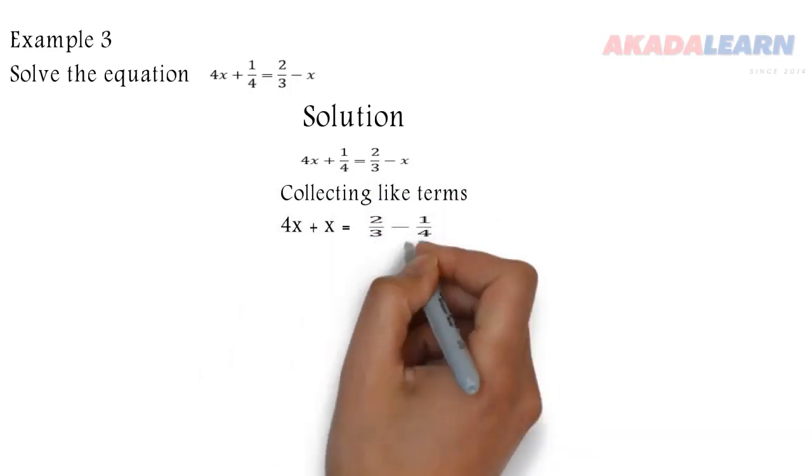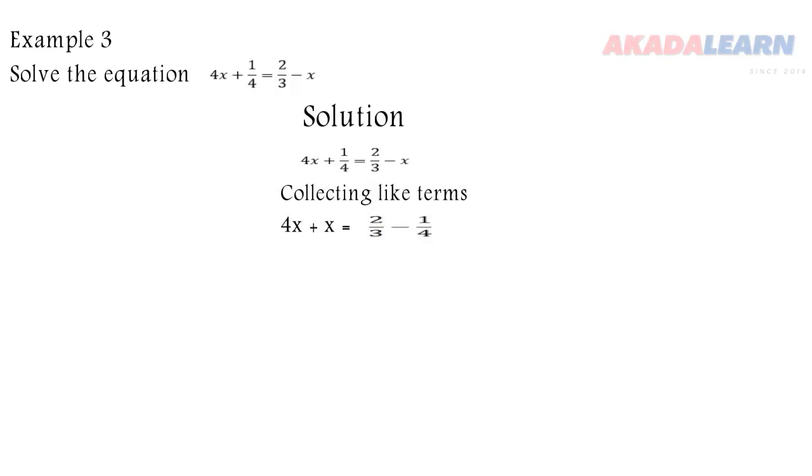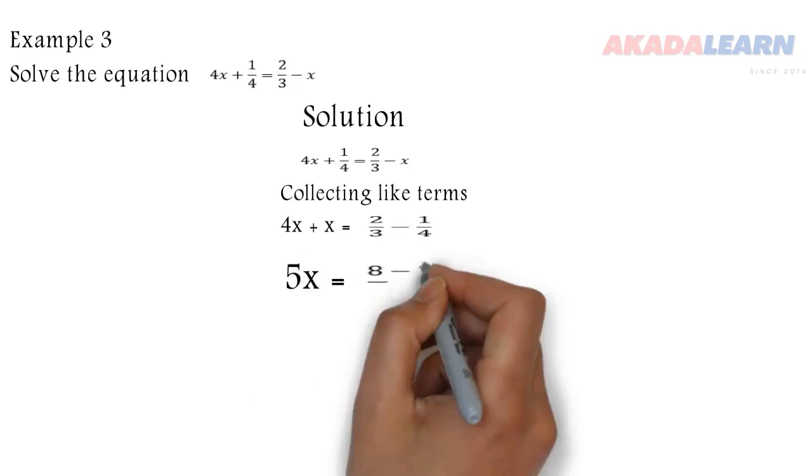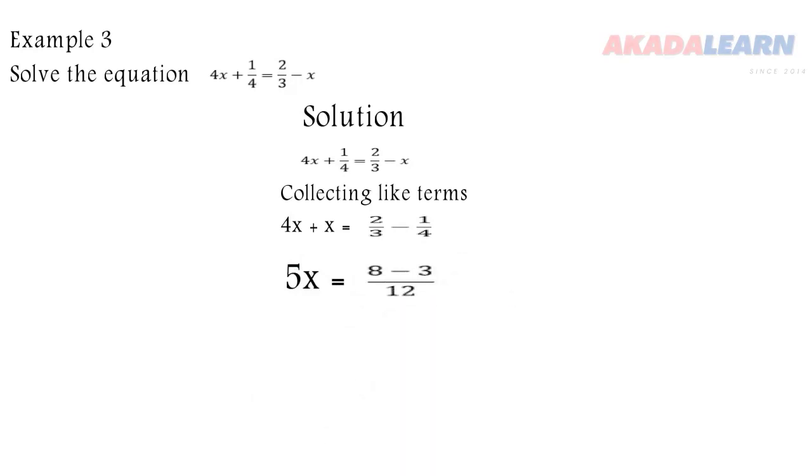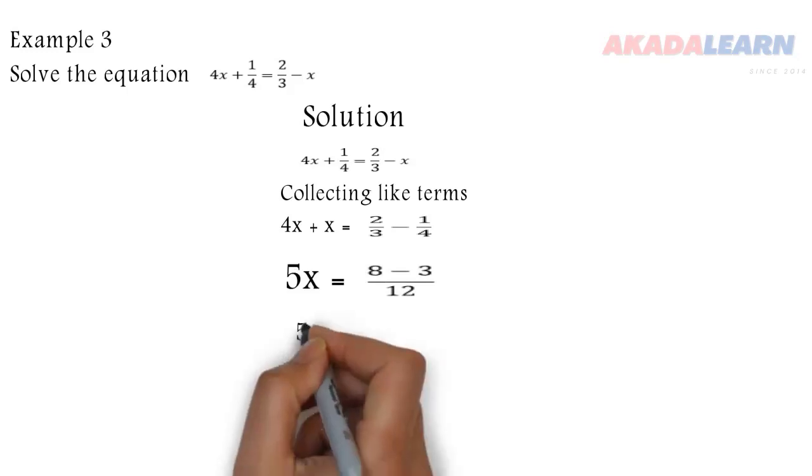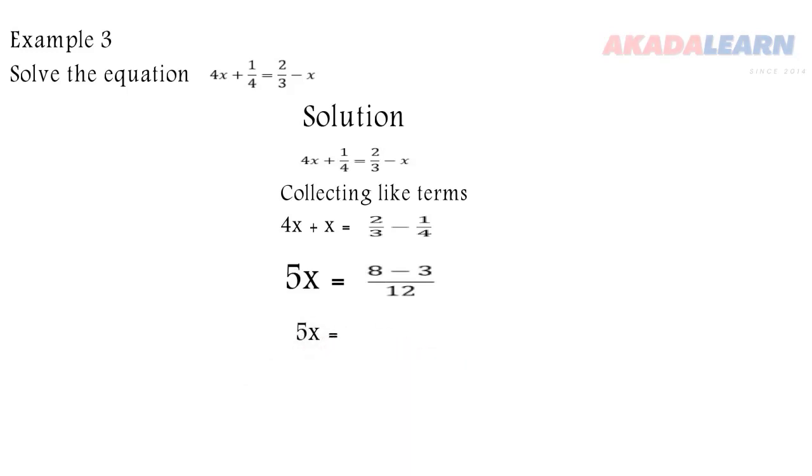4x + x is 5x. The LCM of 3 and 4 is 12. 12 divided by 3 is 4, 4 times 2 is 8. 12 divided by 4 is 3, 3 times 1 is 3. So 5x = 5/12.